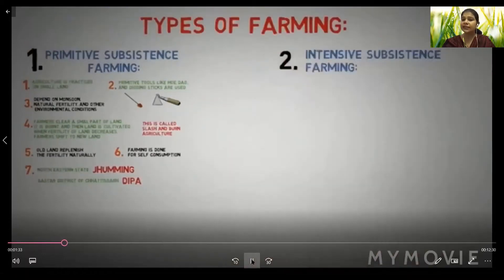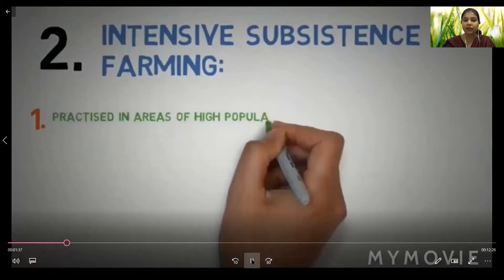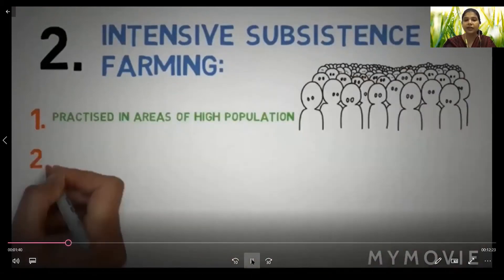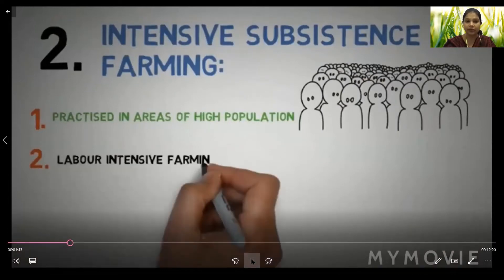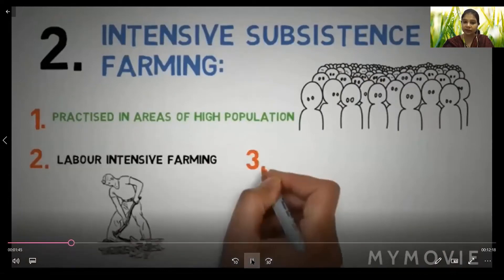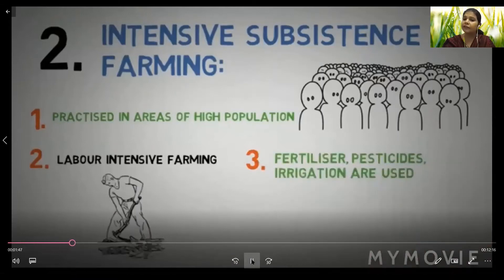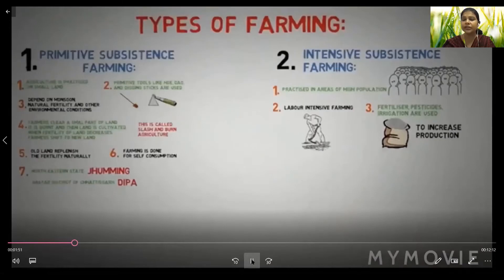The second type is intensive subsistence farming. It is practiced in areas of high population and is labor-intensive. Fertilizers, pesticides, and irrigation are used to increase production.